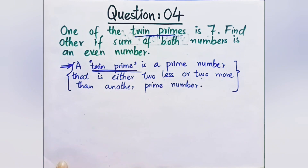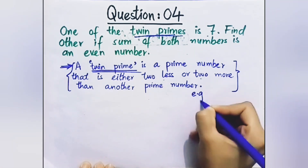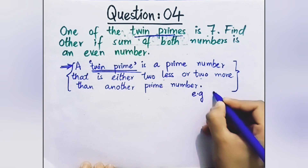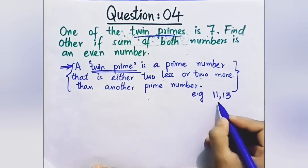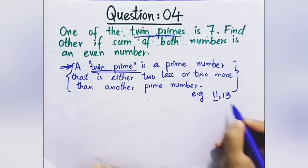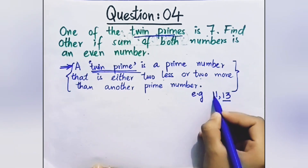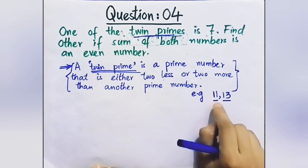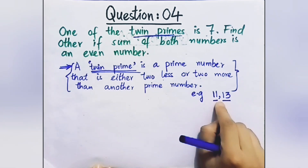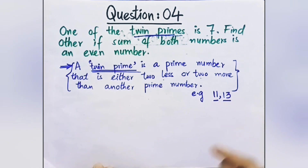Twin means two. For example, 11 and 13 are twin primes. 11 is a prime number and 13 is a prime number. If you take 11 and add two, you get 13. So 11 and 13 are twin prime numbers.